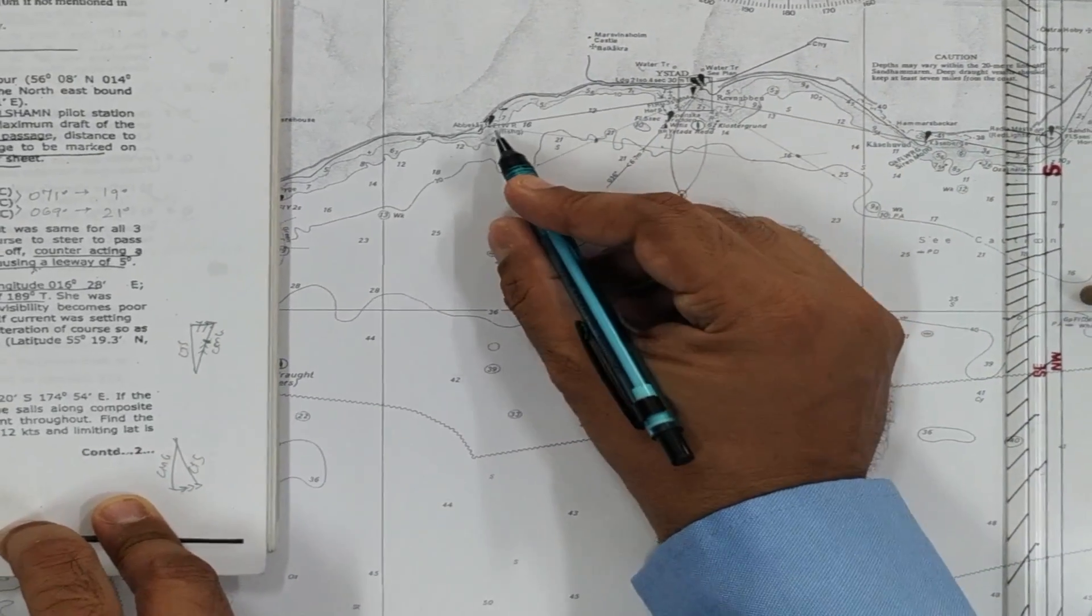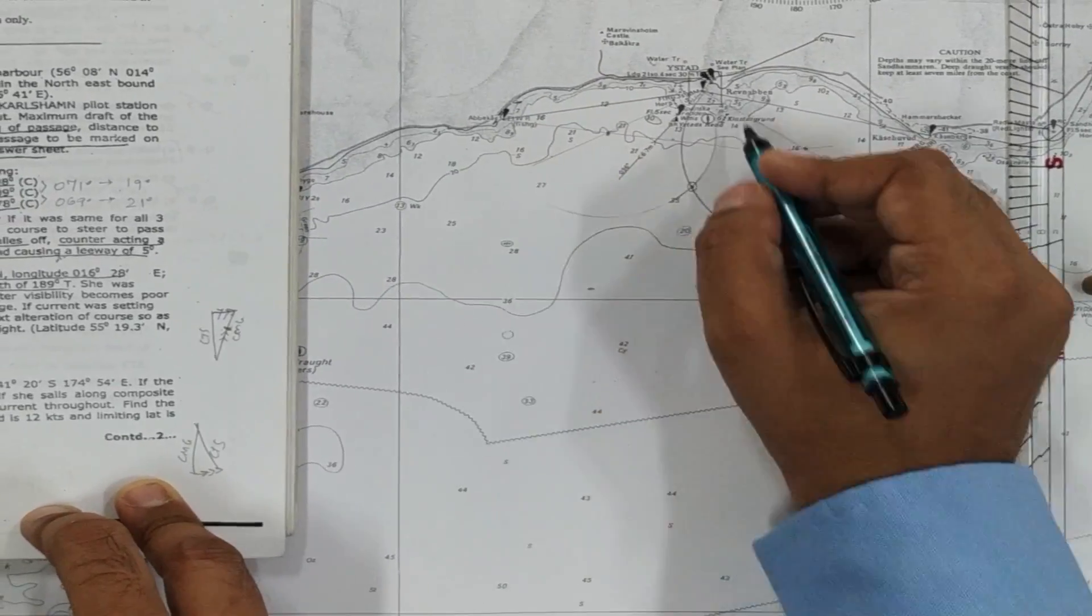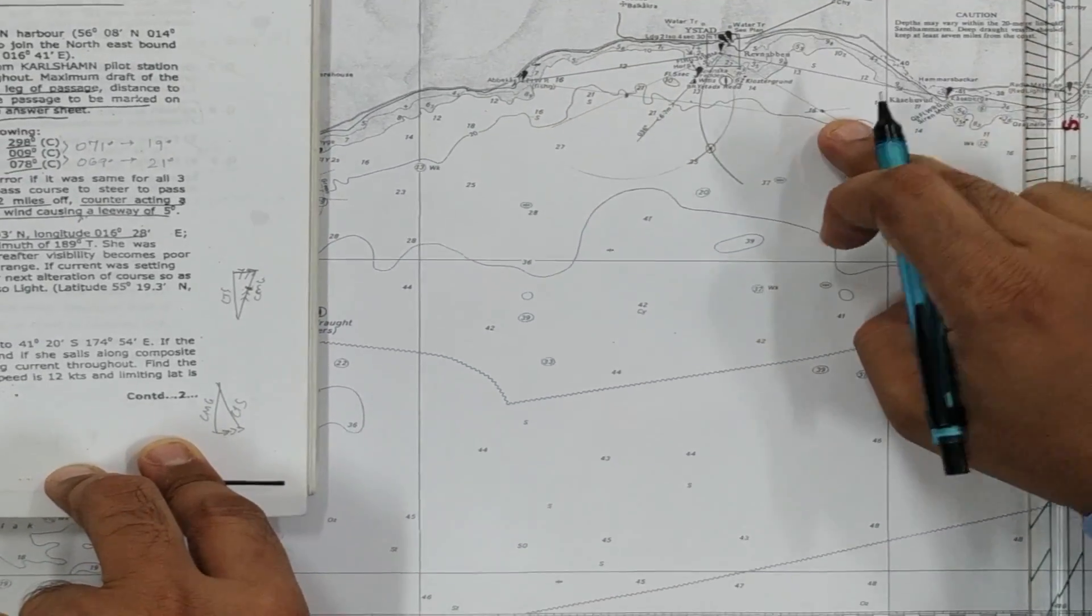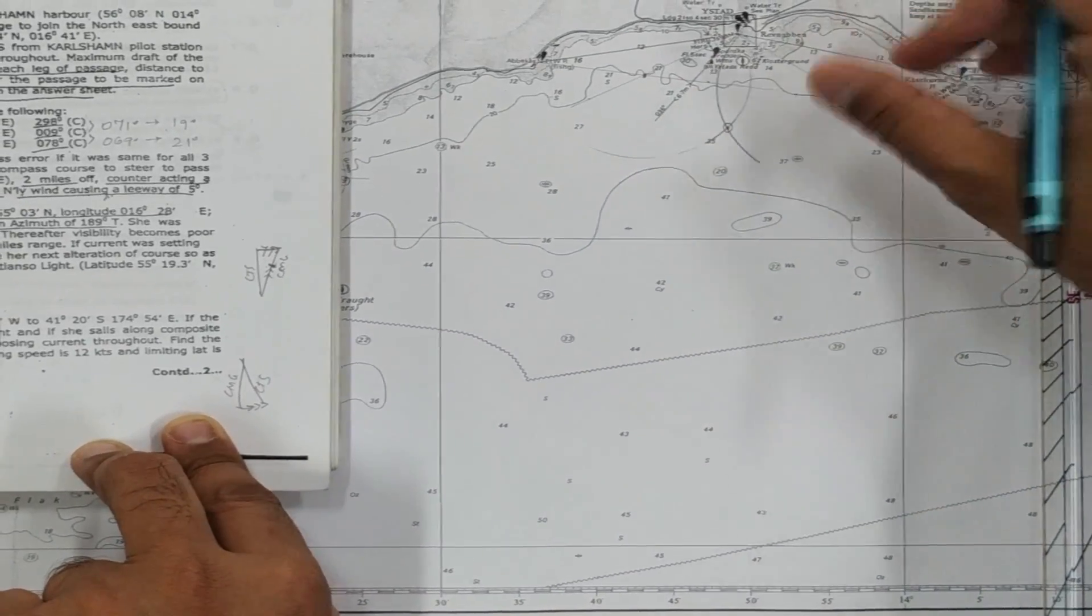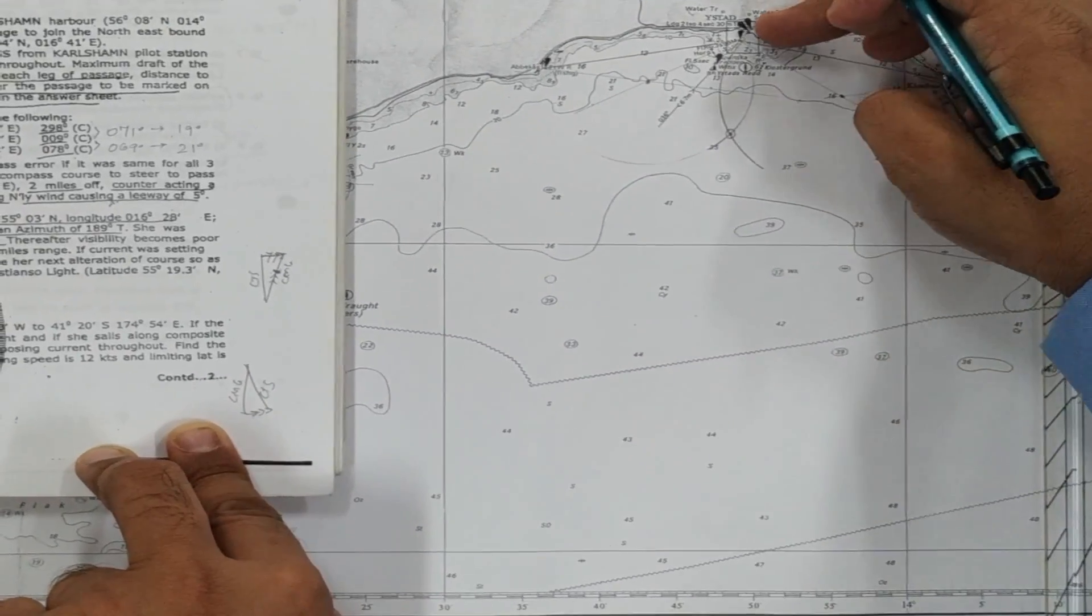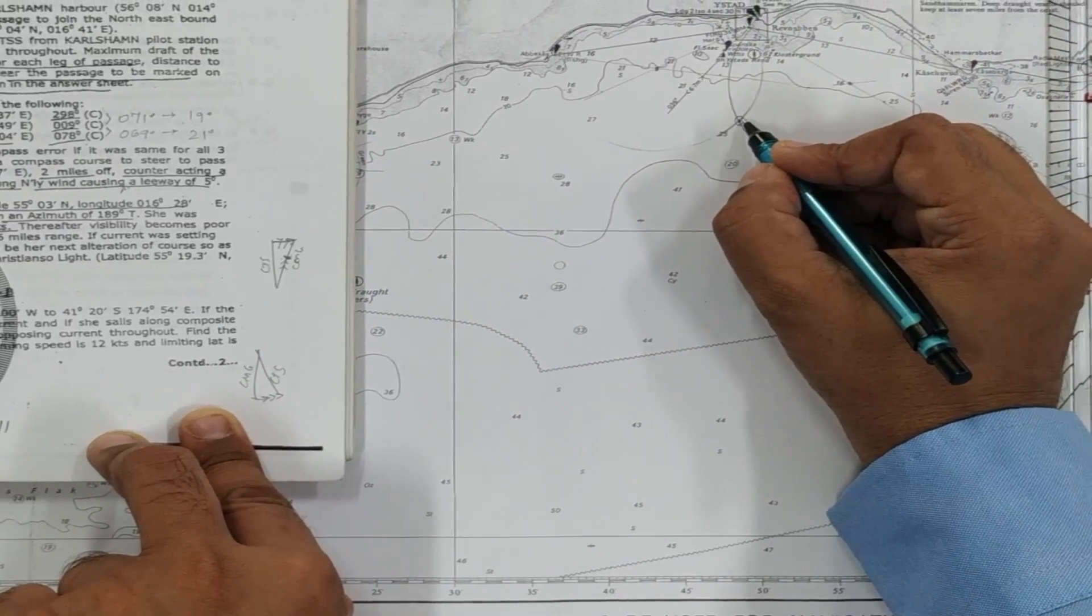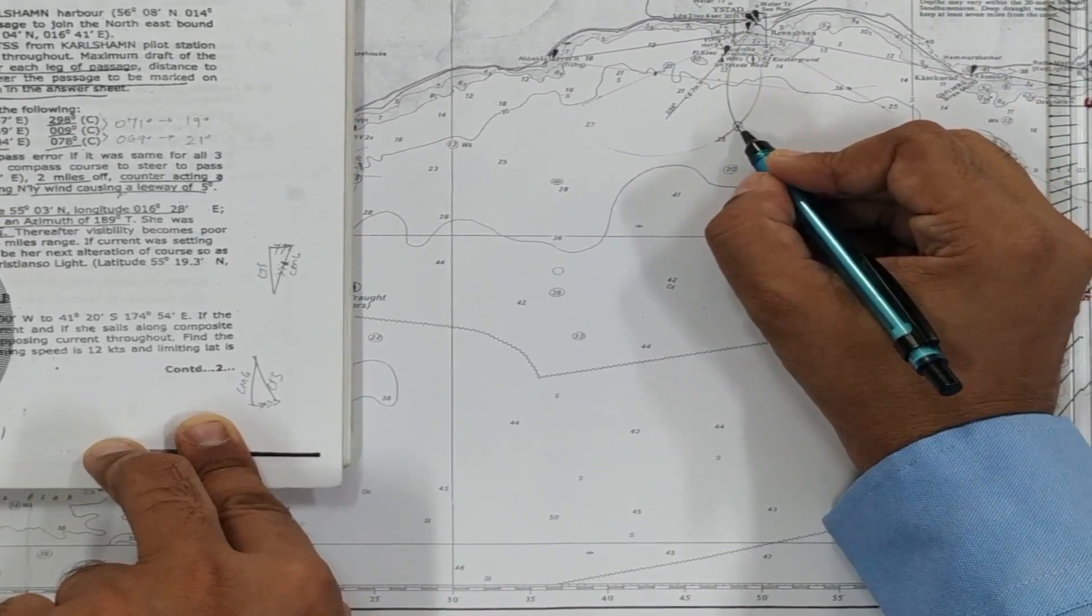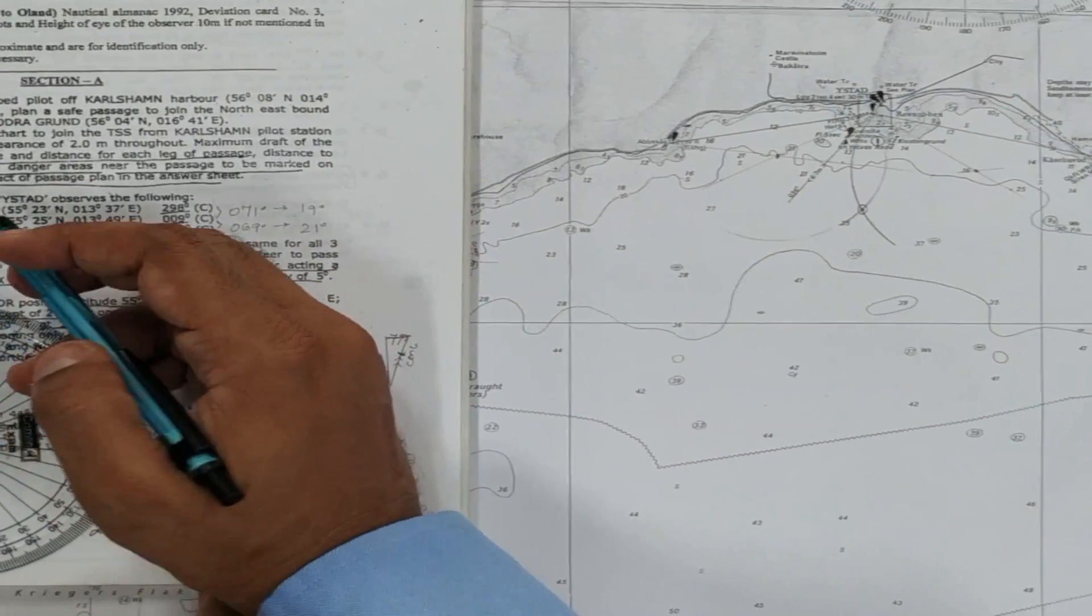We do a similar thing between Weistad and Kasebarga and we draw this 21 degrees. The point comes here. Post which we use a compass and draw a line touching Abbekas. And again from this point, what we got between Weistad and Kasebarga, keeping this point at the center and Weistad as one of the circumference, we draw another circle. Both the circles meet at this point. This happens to be the fix of the vessel at anchor.